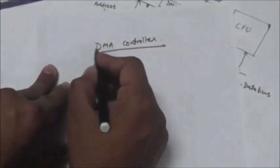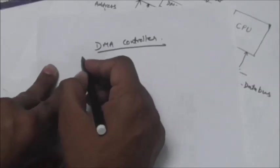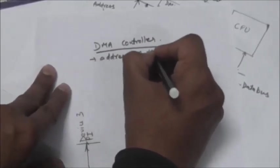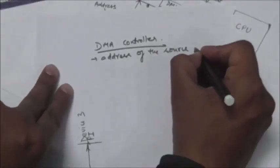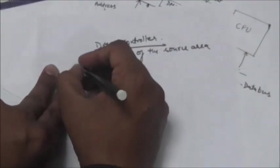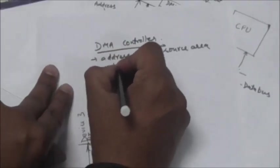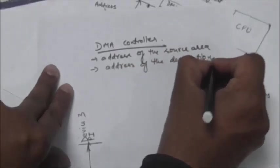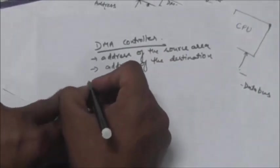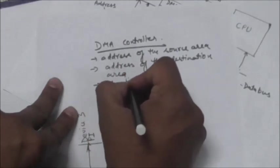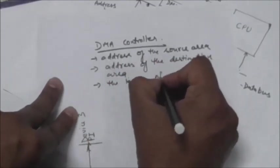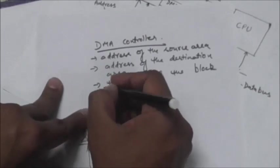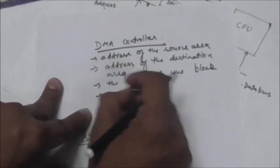DMA requires initialization by the CPU. The typical set of parameters includes the address of the source, the address of the destination area, the length of the block, and whether DMA controller should generate a processor interrupt once the block transfer is complete.